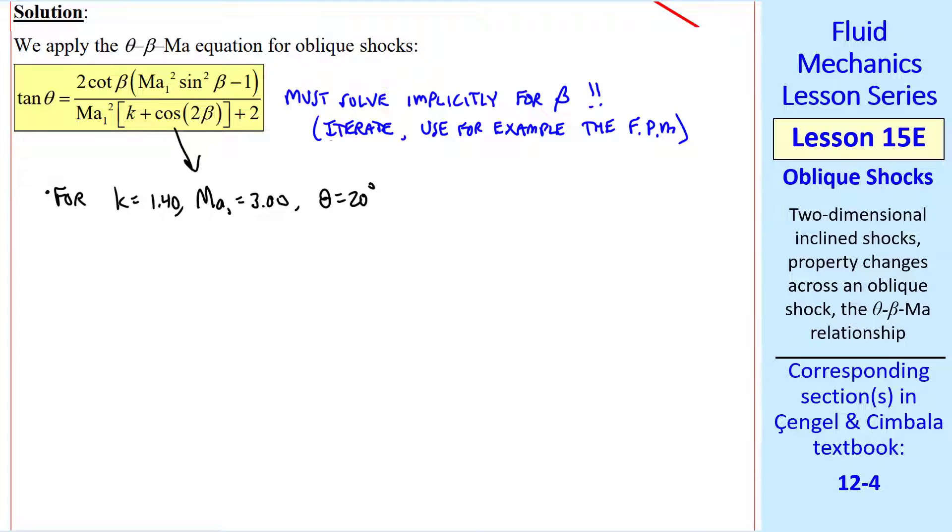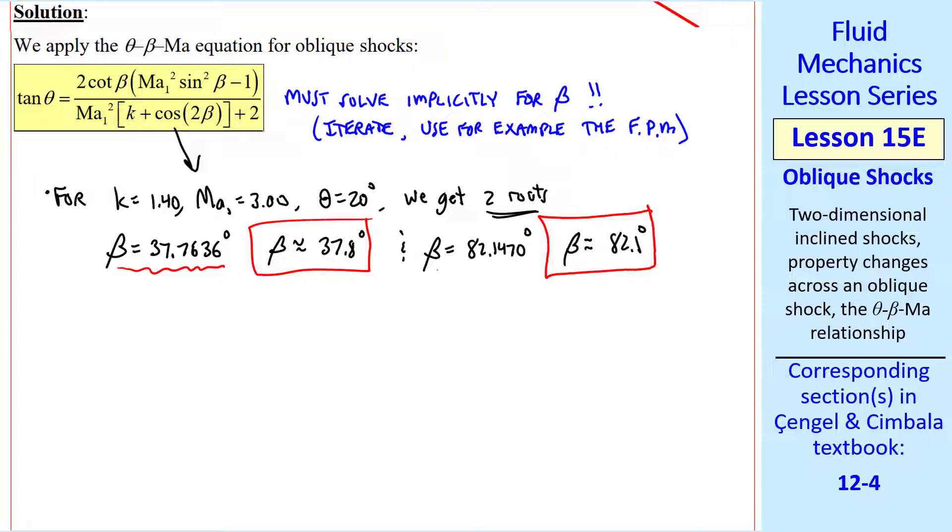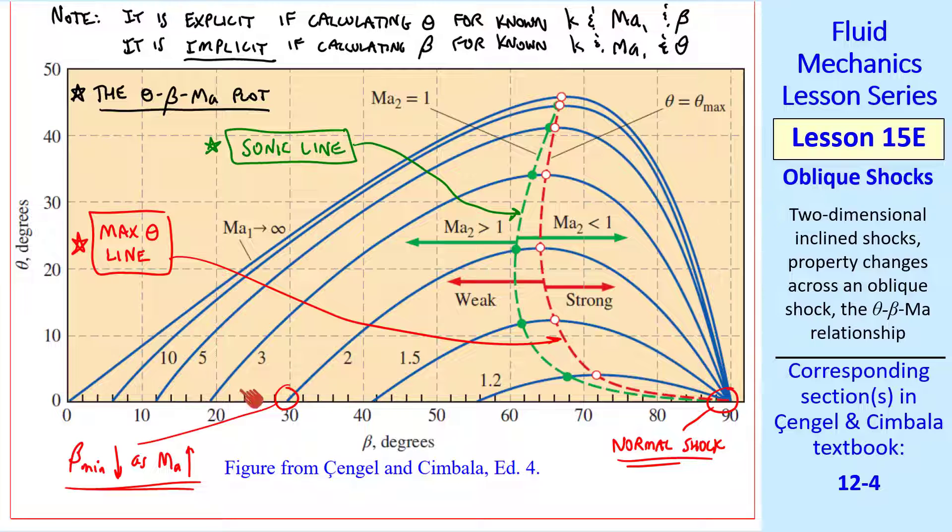For the given values here of K, Mach number 1, and theta, we get two roots, namely beta of about 37.8 degrees, but I'll use all these digits in my calculations, and beta equal 82.1 degrees. The smaller one is the weak oblique shock, and the larger one is the strong oblique shock. Looking back at our plot, for the Mach number 3 curve, and for theta equal 20 degrees, this is our weak shock case at 37.8 degrees, and this is our strong shock case at 82.1 degrees. For any theta less than theta max, we get two roots for a given Mach number curve, the weak shock and the strong shock.